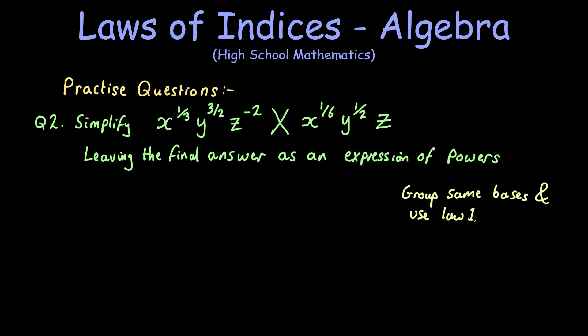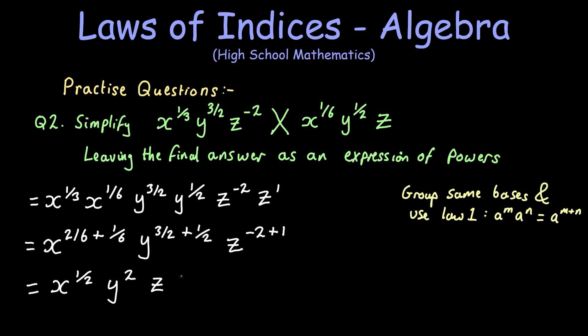And we can use law one again, because the bases are multiplied together. And all we need to do is add the powers. And we end up with x to the power of a half, y squared, and z to the power of minus one.